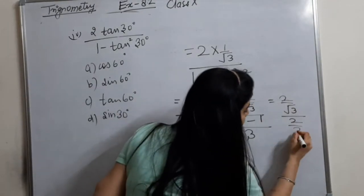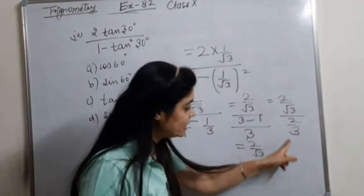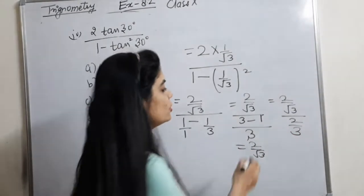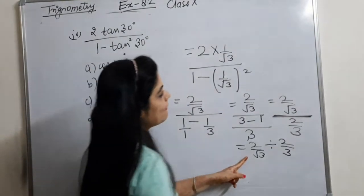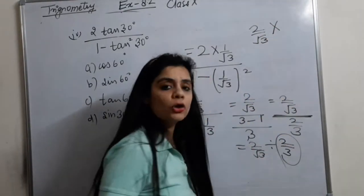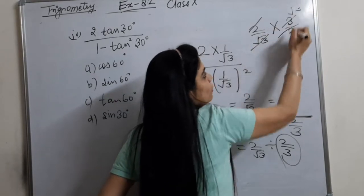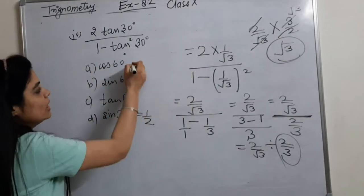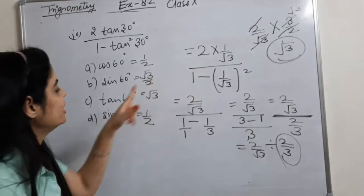We have 2 upon root 3 divided by 2 upon 3. The 3 goes to the numerator as a division sign — so it becomes 3 upon 2. The 2s cancel out, root 3 and root 3 cancel out, so we get root 3. Now which trigonometric value matches root 3? Sin 30 is 1 by 2, sin 45 is 1 by root 2, sin 60 is root 3 by 2 — so root 3 matches with tan 60. So that option is correct.